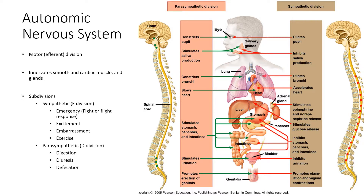The autonomic nervous system has its own two subdivisions. It has the sympathetic branch, or the E-division, which is involved in the fight or flight response or the emergency response. It's also involved in excitement, embarrassment, and exercise.